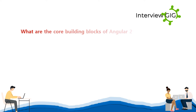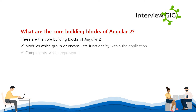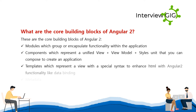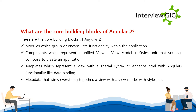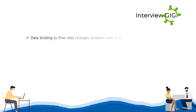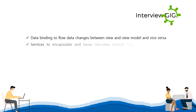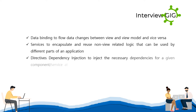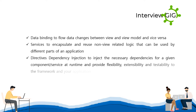What are the core building blocks of Angular 2? These are the core building blocks: NgModules, which group or encapsulate functionality within the application; components, which represent a unified view plus view model plus styles unit that you can compose to create an application; templates, which represent a view with special syntax to enhance HTML with Angular 2 functionality like data binding; metadata, that wires everything together; data binding, to flow data changes between view and view model; services, to encapsulate and reuse non-view related logic; and directives and dependency injection, to inject necessary dependencies at runtime and provide flexibility, extensibility, and testability.